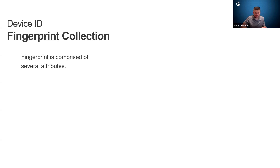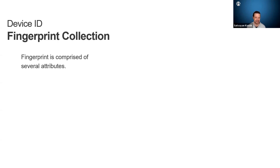The reason device ID is important is we can come up with a unique ID on a per-client-request basis, even if they're doing something out of the norm. For example, you can use one legitimate browser, come in, grab the cookies, and then with the same IP, steal those cookies and put them into an automated attack. But with our technology, that automated attack would have a different device ID than the browser, even though it has the right cookies.